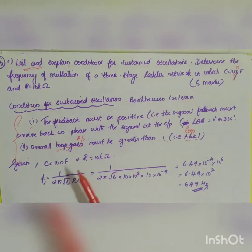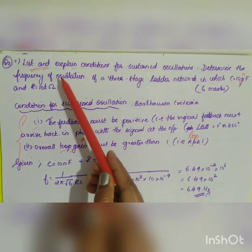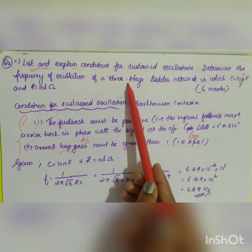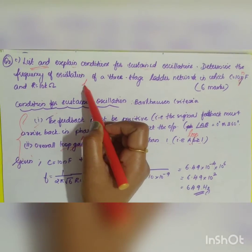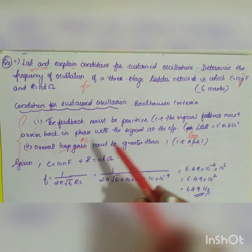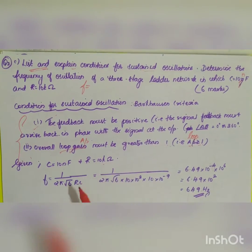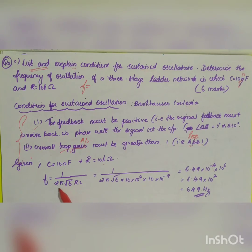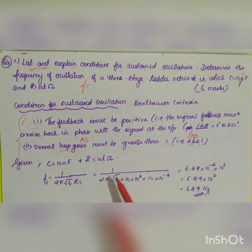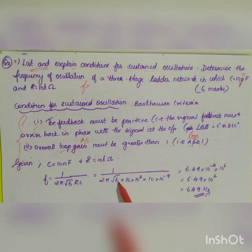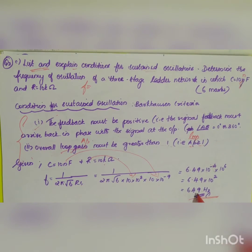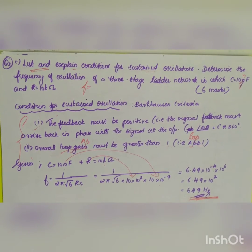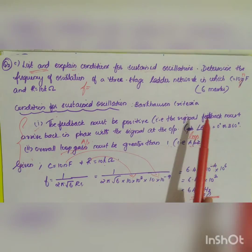Now determine the frequency of oscillation of the three-stage ladder network. Given the values of C and R, for a ladder network, f equals 1 divided by 2π√6 RC. Substituting the values and solving, you get 649 hertz.